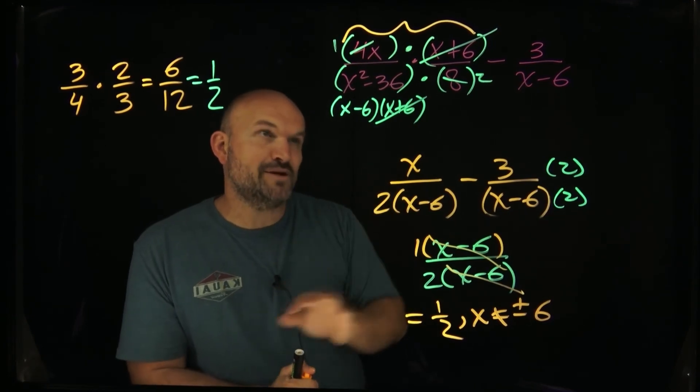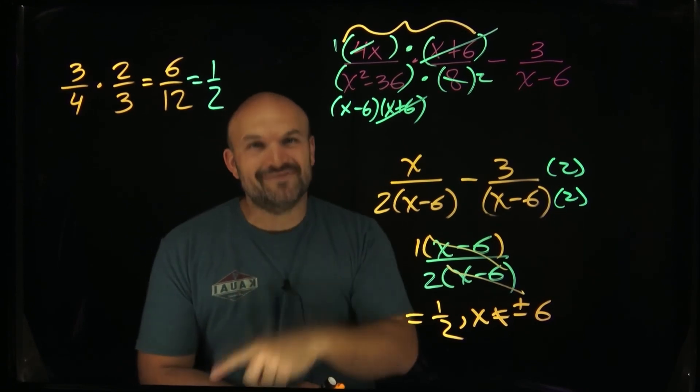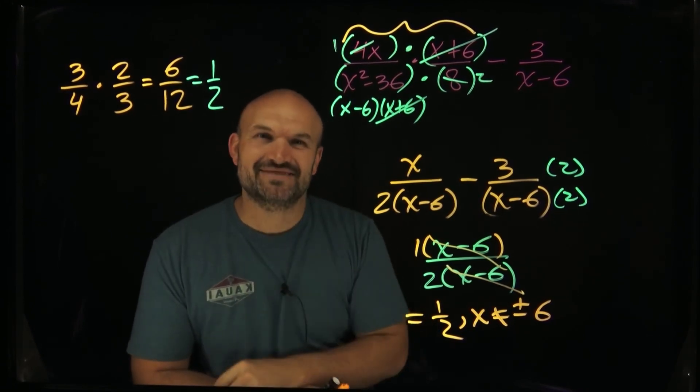So make sure you go ahead and do that when you need to create your excluded values. This was me simplifying a rational expression with multiplication and subtraction. In the next example, I'll simplify a rational expression with division and addition. I'll see you in the next video.